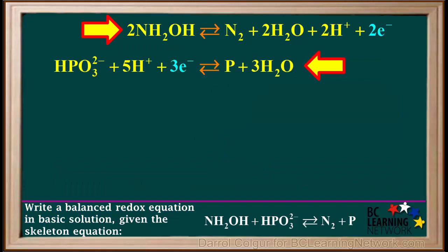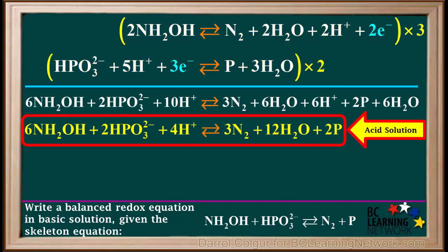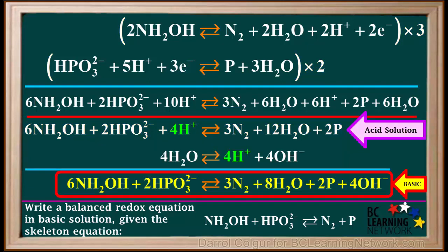To review, in part 1 we determined and balanced the half reactions in acid solution. Then in part 2 we used the half reactions to build the equation for the redox equation in acid solution. And finally, in part 3 we converted the equation in acid solution to the final equation in basic solution.